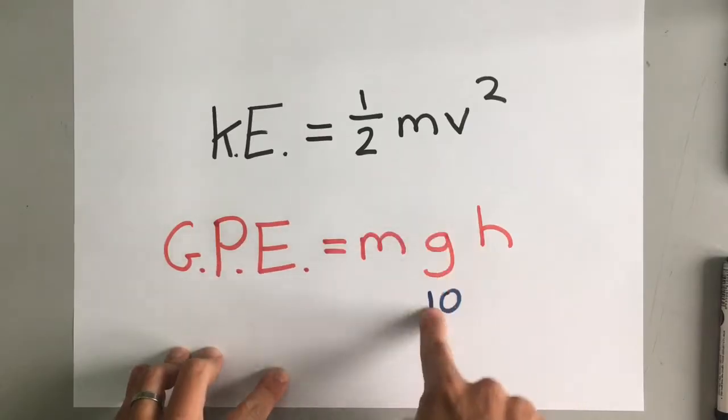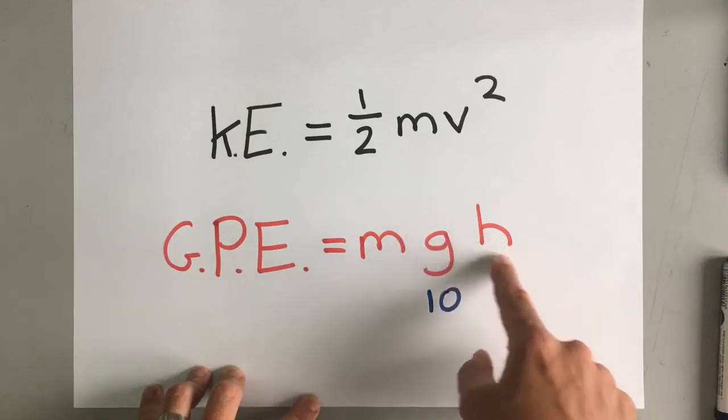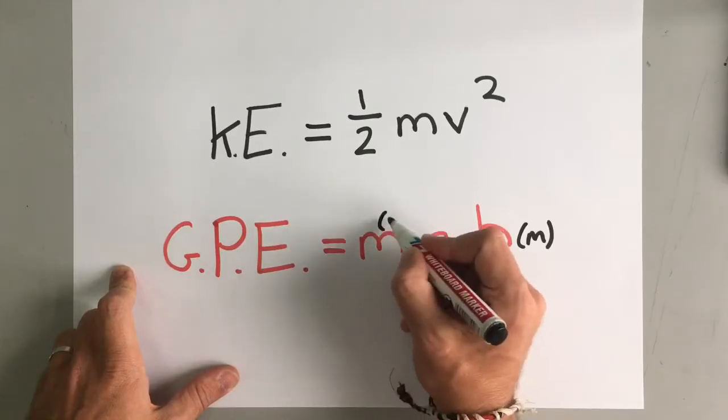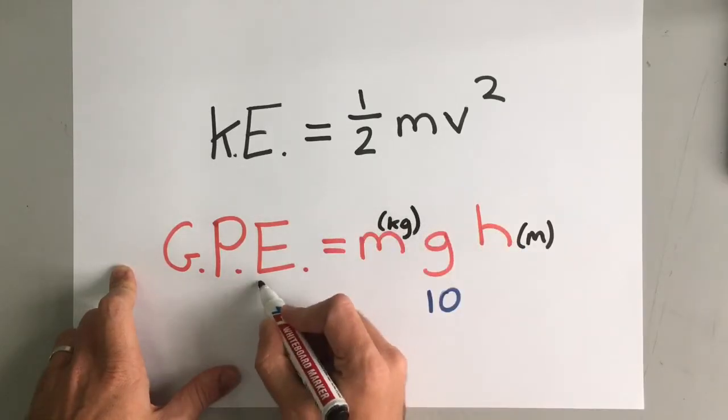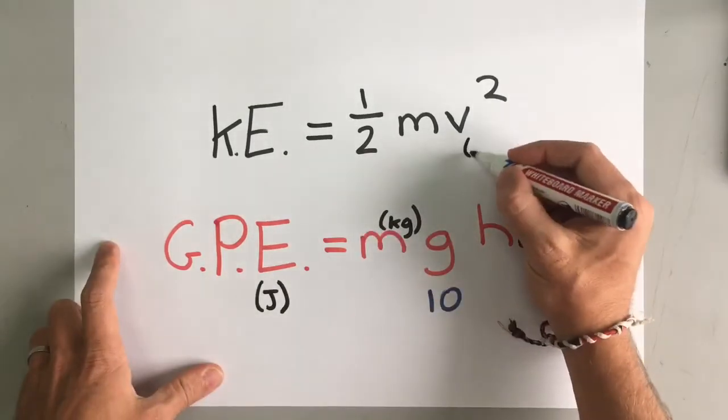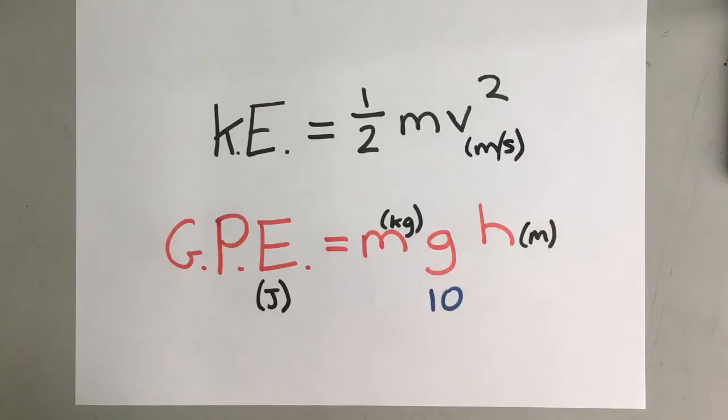So, we've got gravity is 10. We've got the mass of something. And in our example before, we said it was one kilogram. And we've got the height. We know that height is measured in meters. We know that mass is measured in kilograms. And we know that energy is measured in joules. And up here, we've got velocity in meters per second.